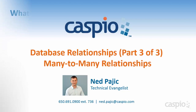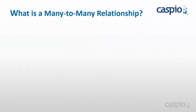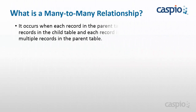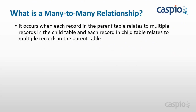Let's take a look. So what exactly is a many-to-many relationship? A many-to-many relationship happens when each record in the parent table relates to multiple records in the child table, and each record in the child table can belong to multiple records in the parent table. Caspio is similar to most major database management systems where many-to-many relationships are possible via a third table.